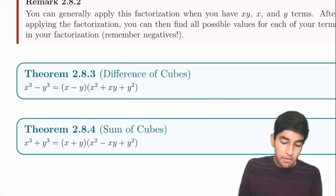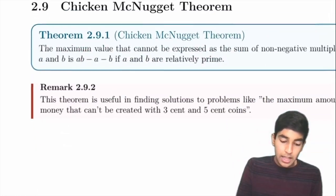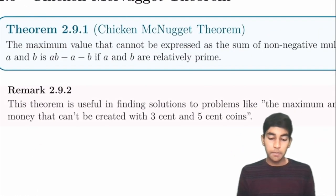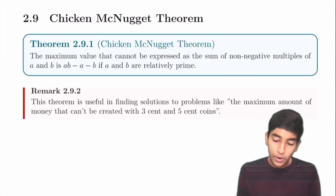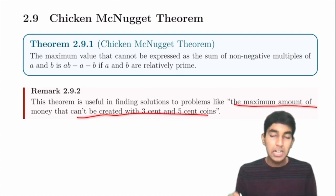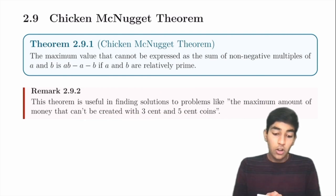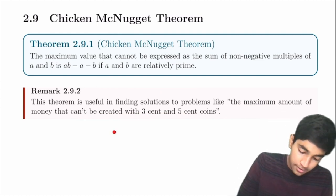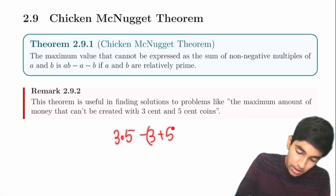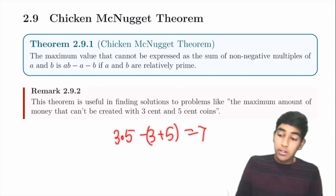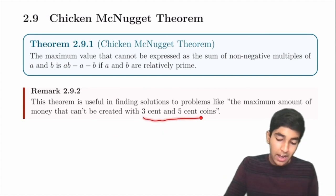Difference of cubes and sum of cubes formulas are available but not that important for AMC. The Chicken McNugget Theorem states that the largest number that cannot be made using only coins of denominations A and B (where GCD(A,B)=1) is AB − A − B. For example, with 3 and 5 cent coins: 3×5 − 3 − 5 = 7, so 7 is the largest amount that can't be made.